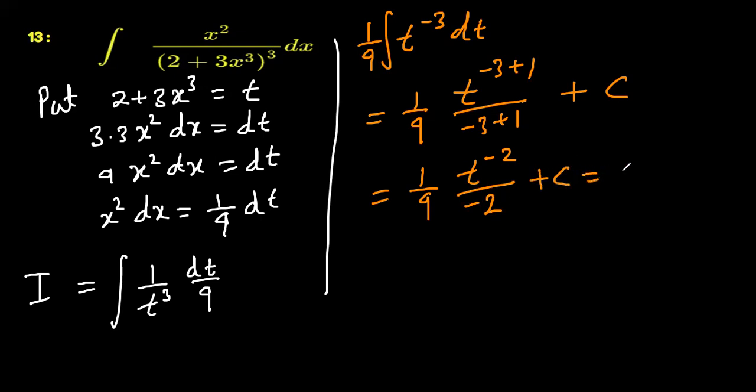Well this can be written as negative 1 over 18 times 1 over t², or t² like this. 1 over 18t² plus c.